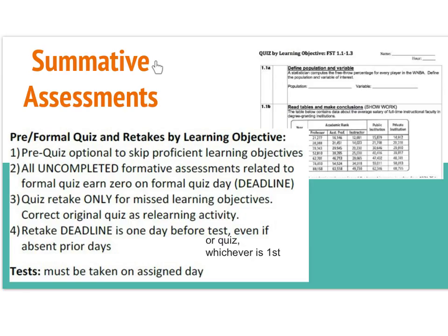One type of summative assessment I have is a quiz, and there are three different versions: a pre-quiz, a formal quiz, and a retake — all done by learning objective. Students will have the option at the beginning of their learning to take a pre-quiz. This is not required. If they show their proficiency on their paper quiz, I will let them skip that particular learning objective and they do not have to take notes or do the online homework. After we do our learning for about three sections of work, students will have the formal quiz where they will be tested on every single learning objective, even if they were able to skip it before. All uncompleted formative assessments at the point of the formal quiz get a zero and cannot be made up.